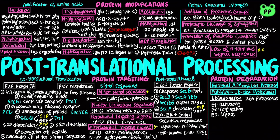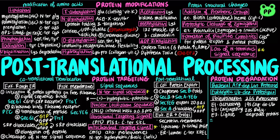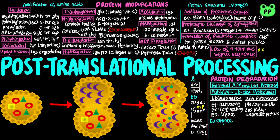Polyubiquitination is recognized by the 26S proteasome, which consists of two 19S caps and a 20S core. The 19S cap recognizes and binds polyubiquitinated proteins, then unfolds and deubiquitinates them. Finally, the 20S core degrades the proteins. Eukaryotic proteins can also be degraded by lysosomes, which typically recycle the amino acids of membrane proteins, extracellular proteins, and proteins with characteristically long half-lives.